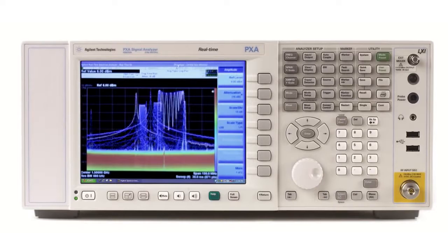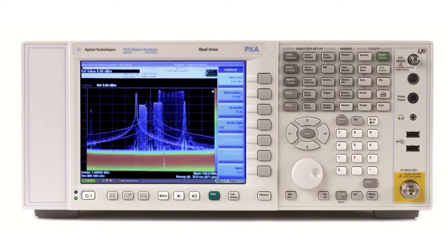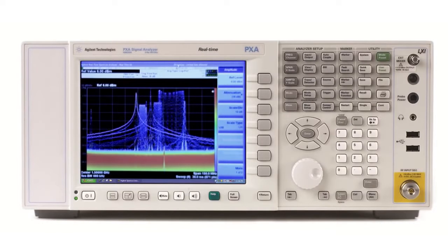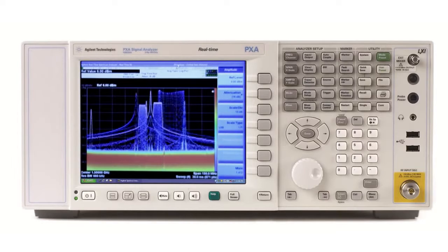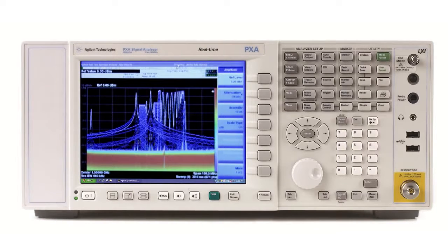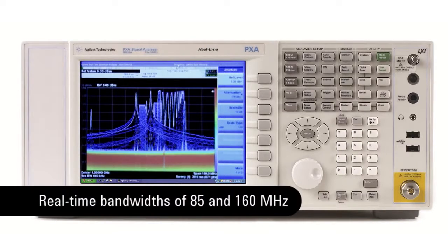Real-time spectrum analysis and frequency mask triggering can be added to any PXA signal analyzer, either new or one you already own. The real-time options cover bandwidths of 85 and 160 megahertz to match the signals and signal environments you need to measure.